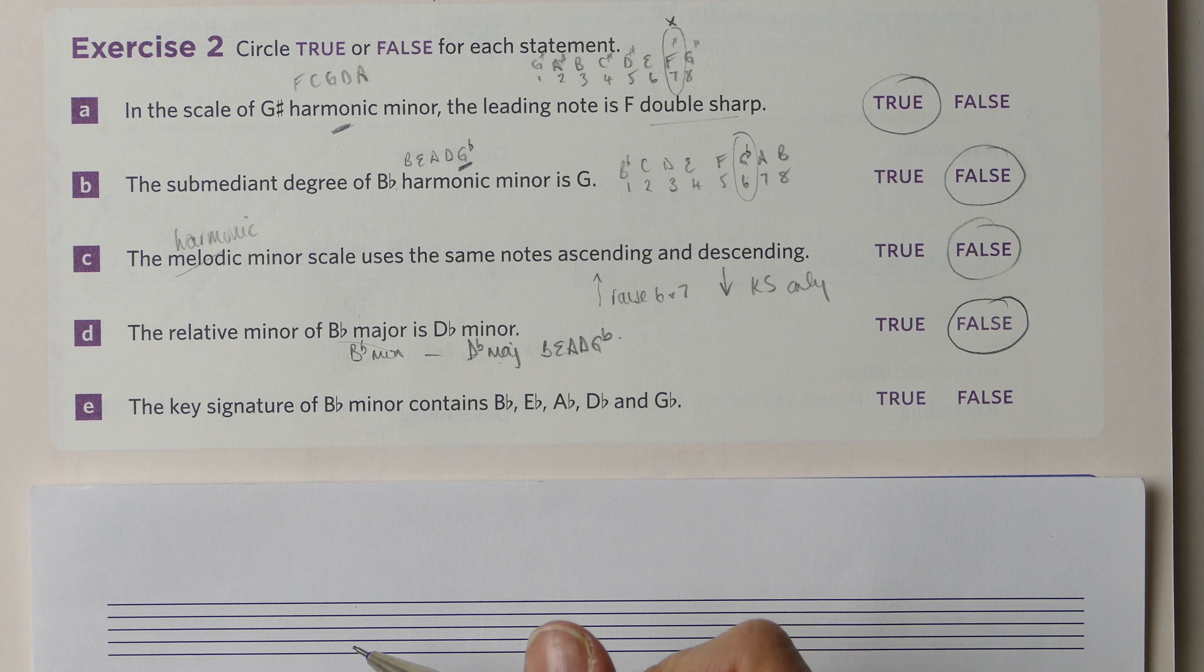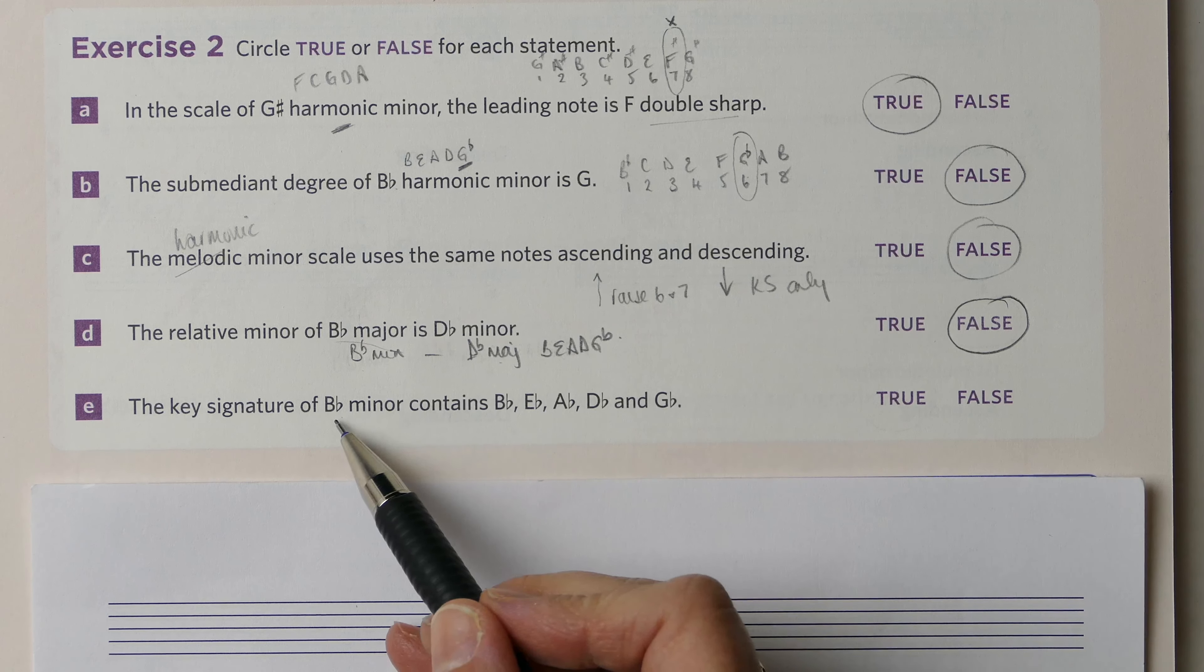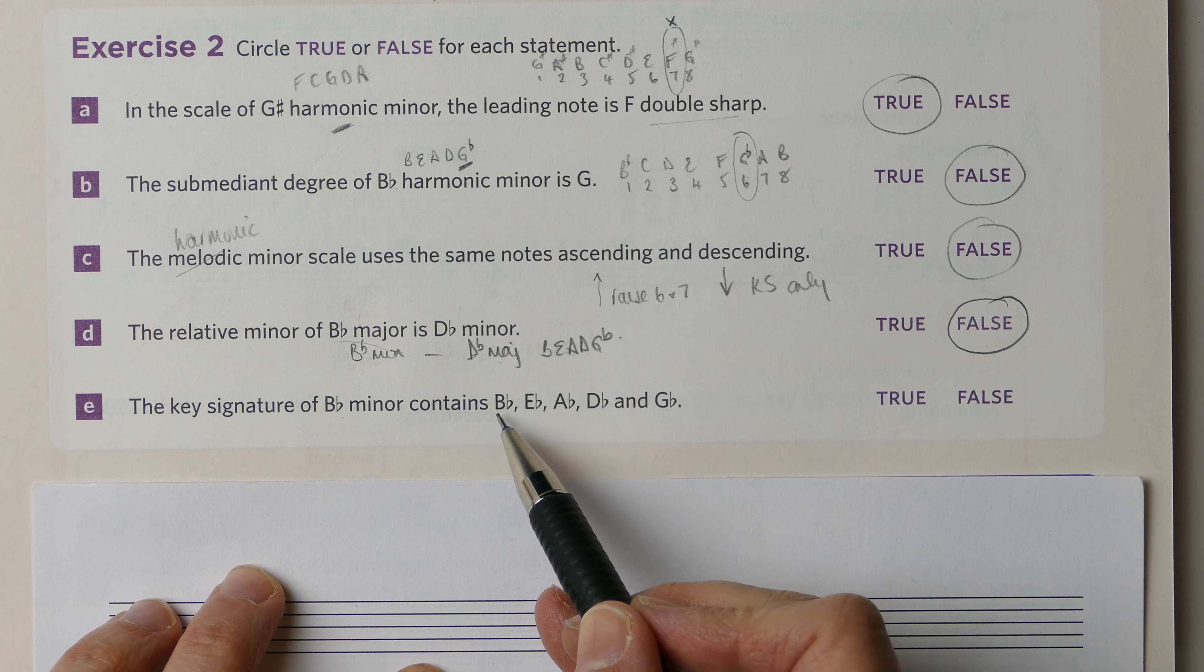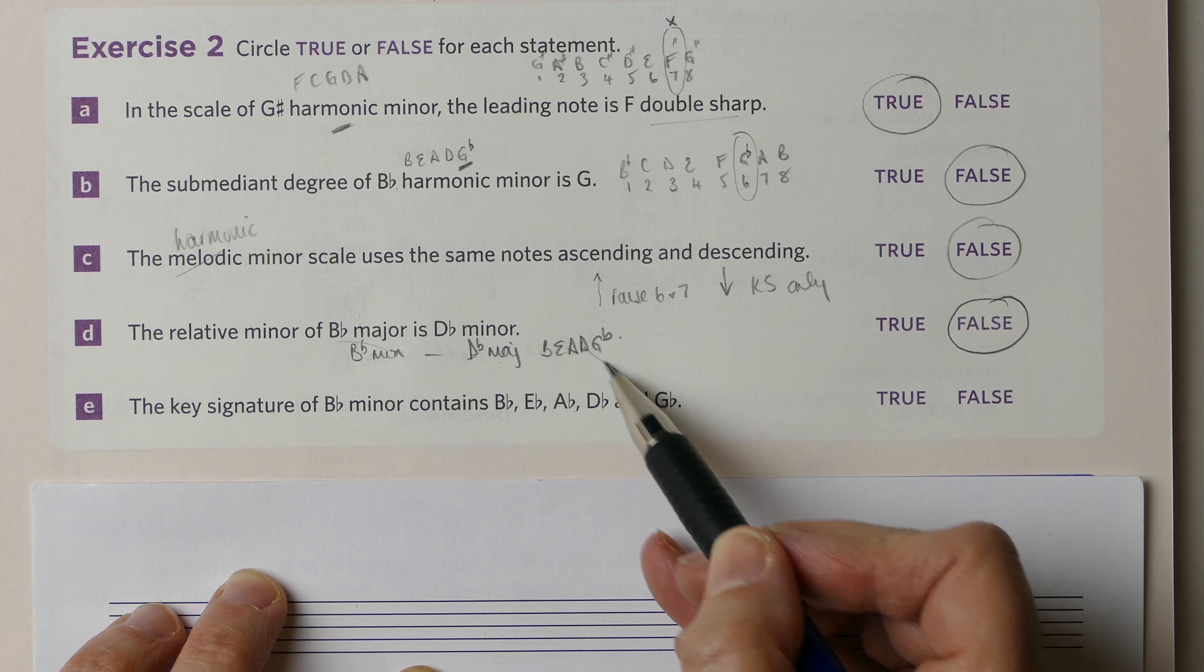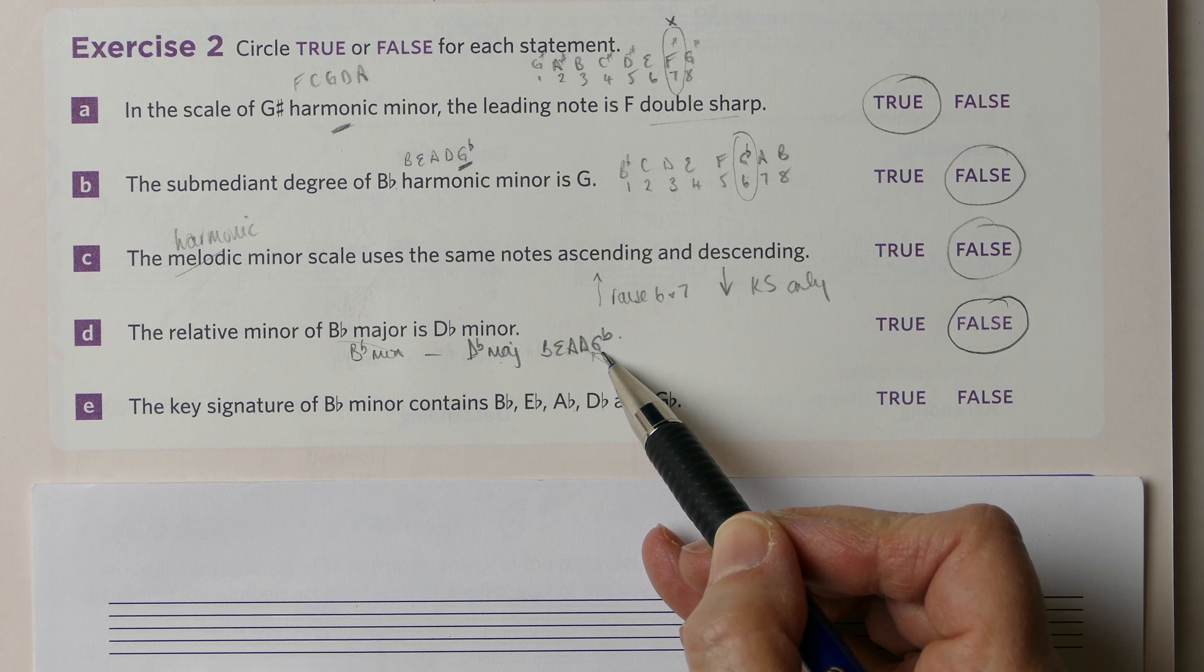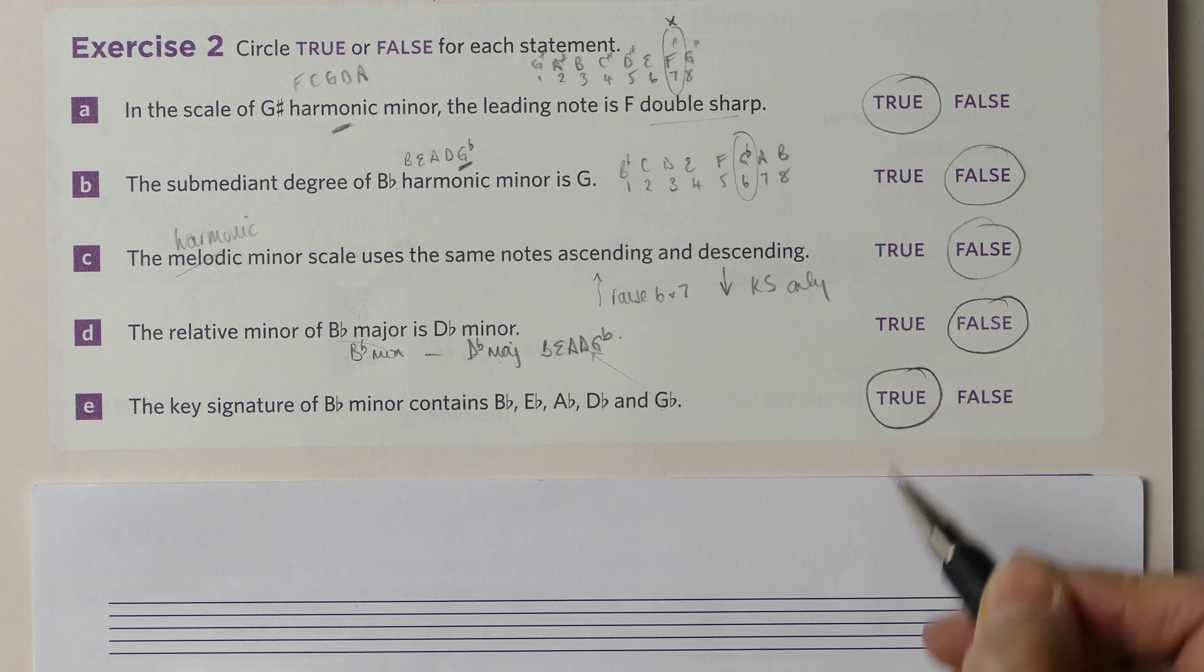And then, is it true that B-flat minor contains the key signature of B-flats, E-flats, A-flats, D-flats, and G-flats? Well, we've just already discussed that, and so we know that that is indeed true.